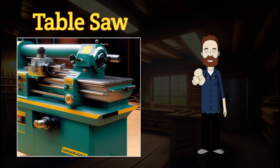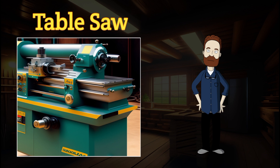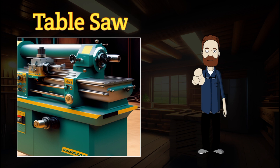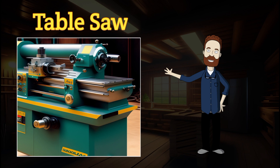The first machine we'll look at is the table saw. It's a workhorse in any woodshop, perfect for making straight cuts on large pieces of wood. With its circular blade mounted on an arbor, you can easily guide the wood through for precise cuts.